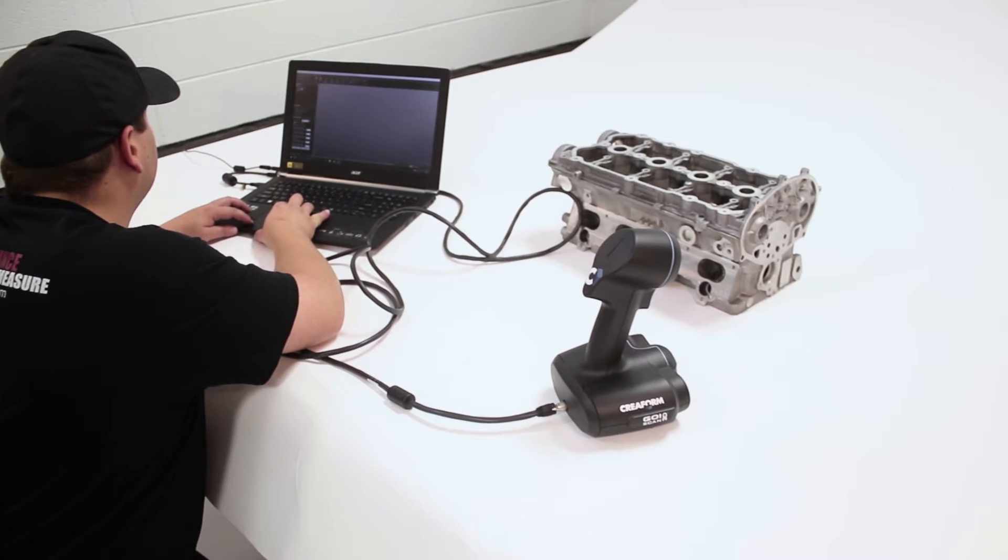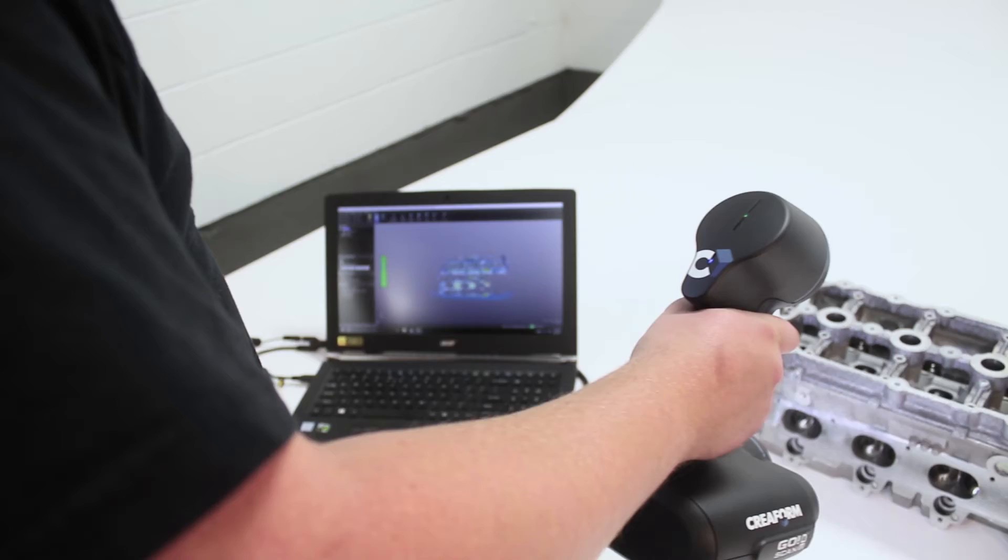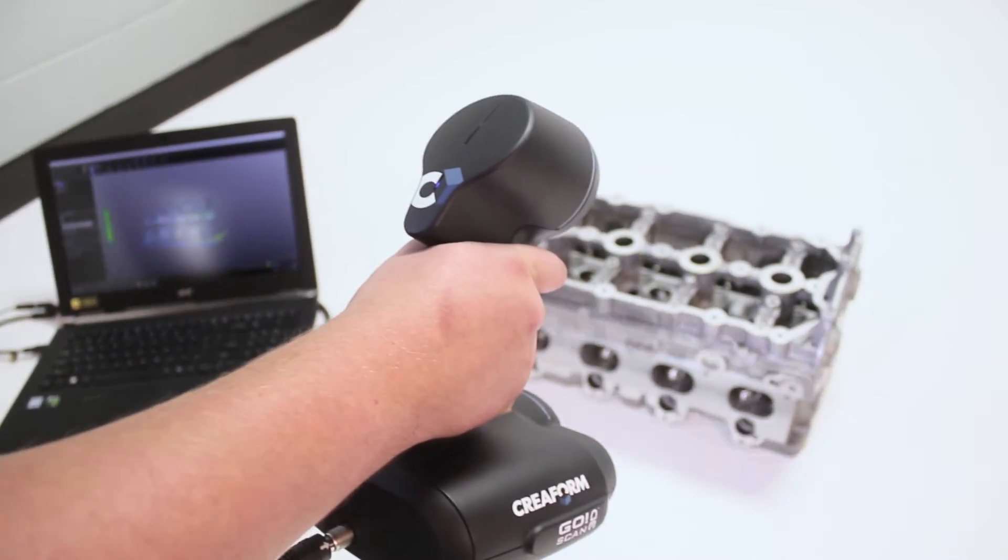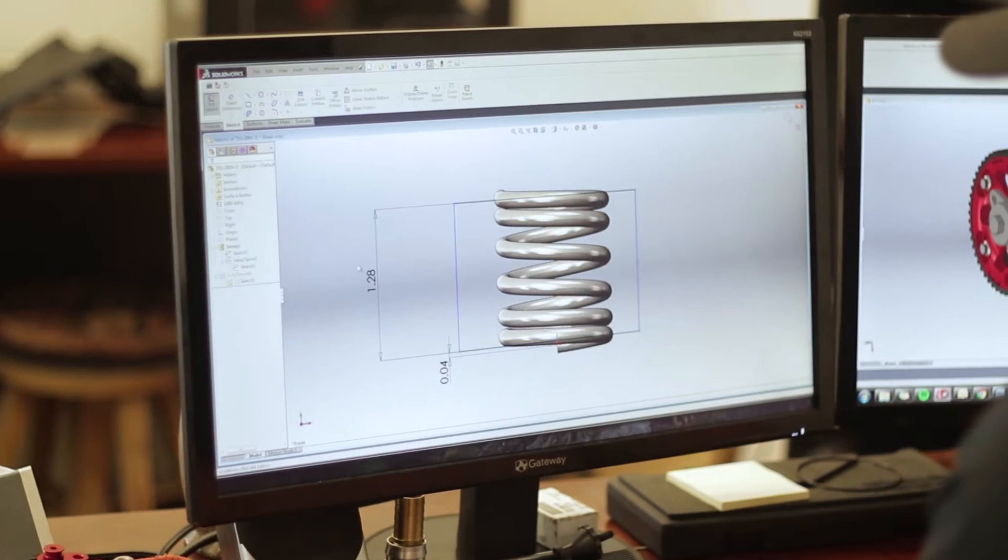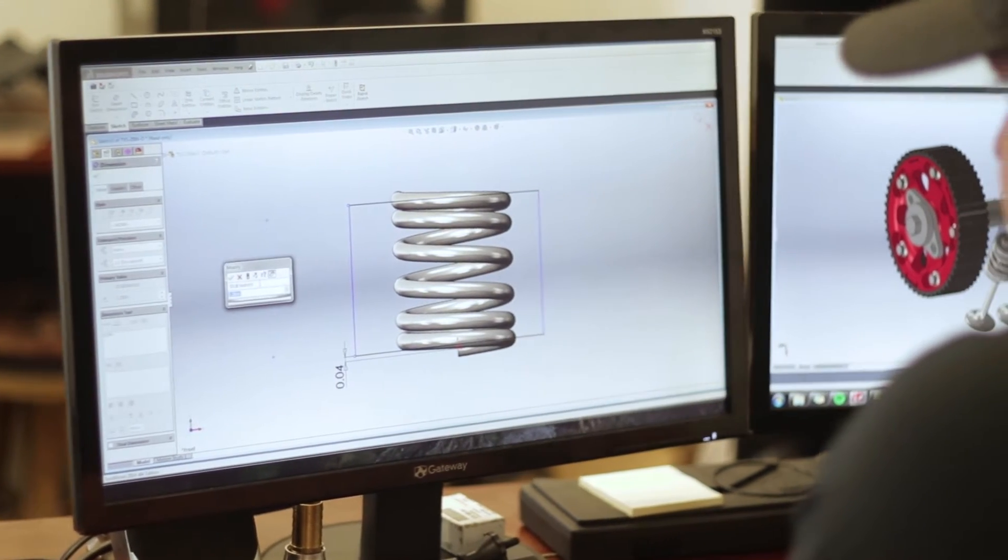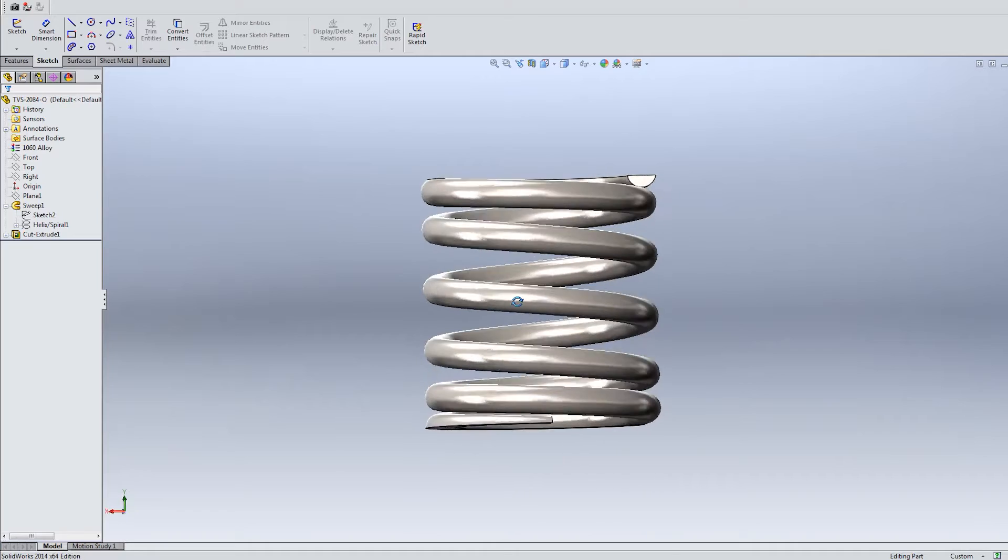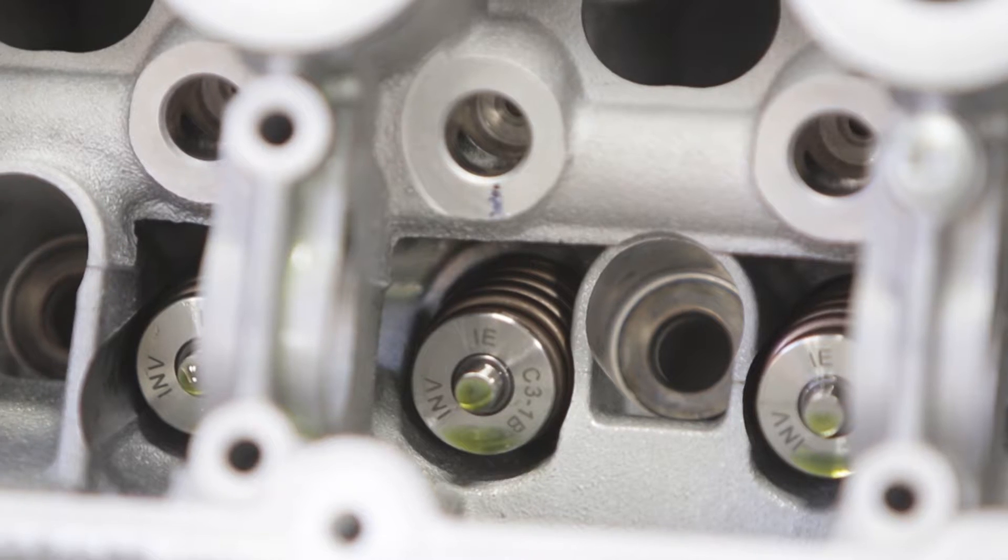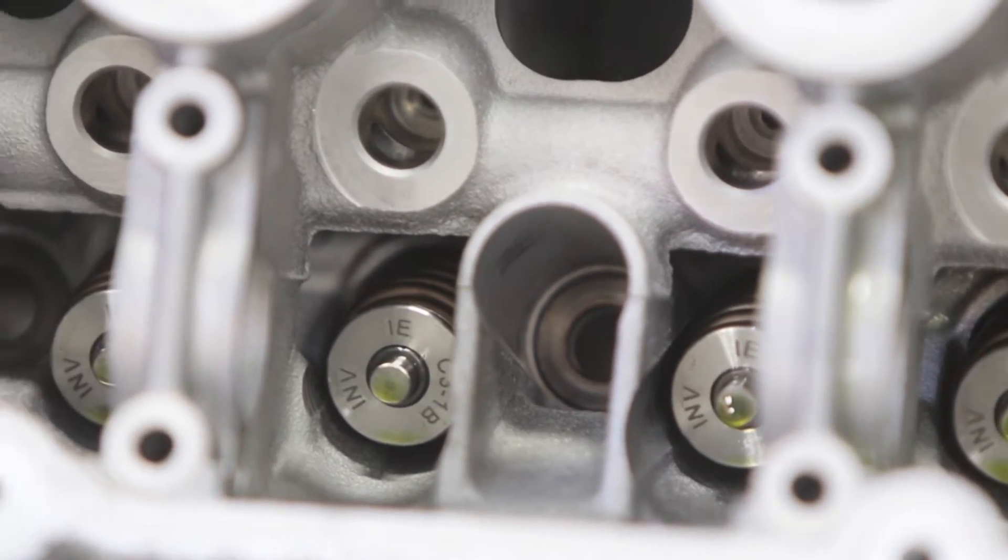First, our engineers measure the factory cylinder head, springs, and retainers. With the correct measurements in hand, the retainer undergoes a design process that optimizes it for strength while being as lightweight as possible. Valve train design software is used to ensure that the springs and retainers will not fail when horsepower and RPMs are increased. Lastly, they are checked for proper fitment within the tight confines of the cylinder head.